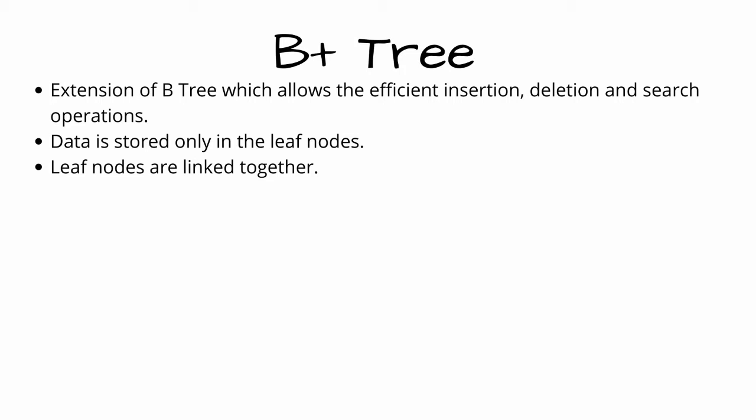The internal nodes of the B plus tree are stored in the main memory, whereas the leaf nodes are stored in the secondary memory.